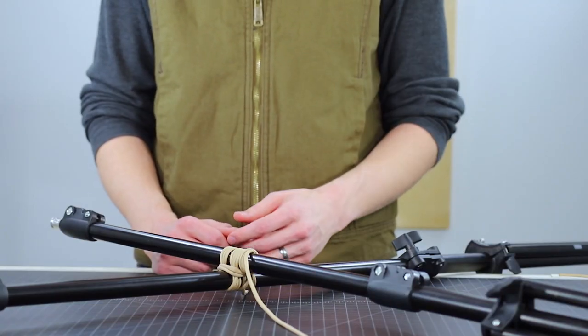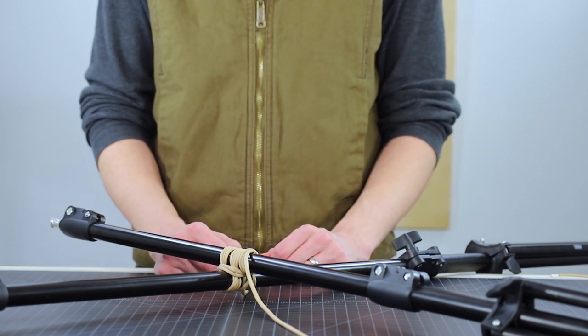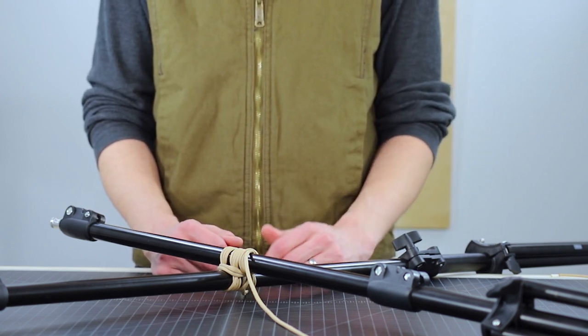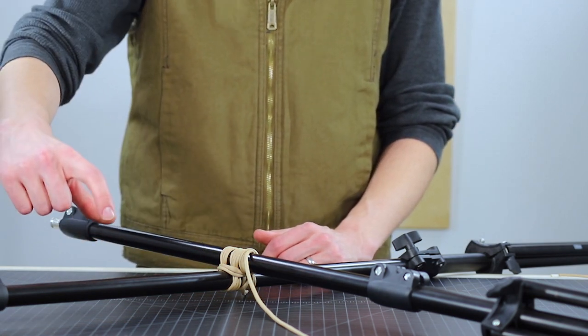There's also what's known as a tripod lashing to make a tripod for cooking over a campfire and a parallel lashing which is used to tie two parallel poles to each other so that they don't split apart.